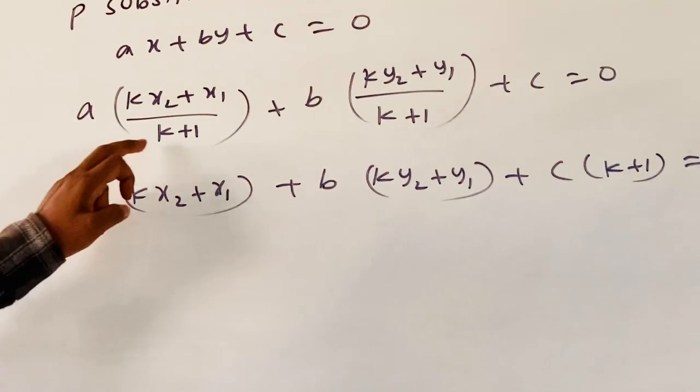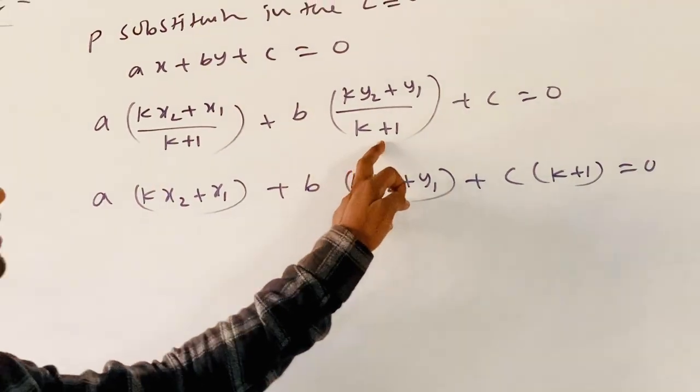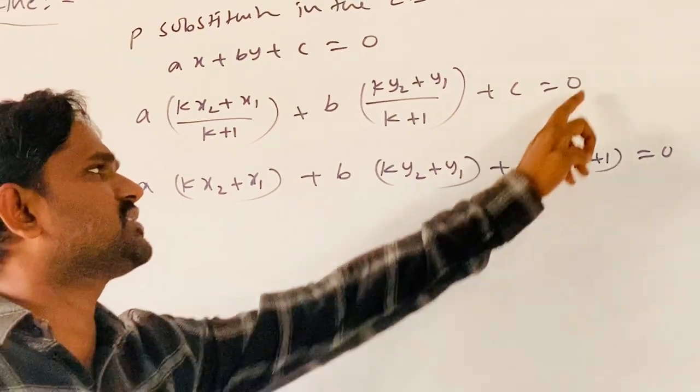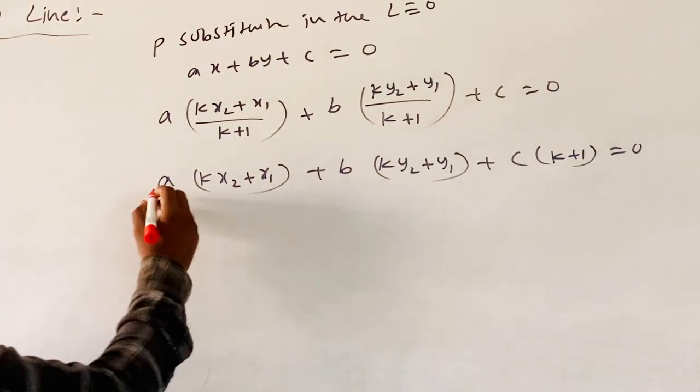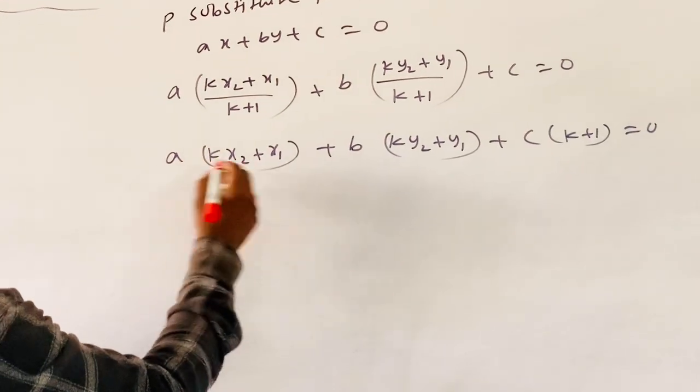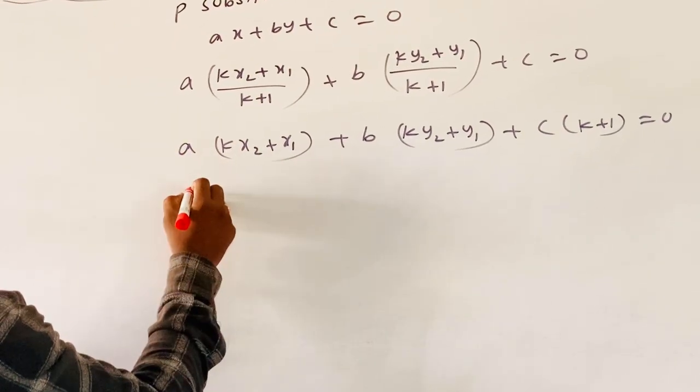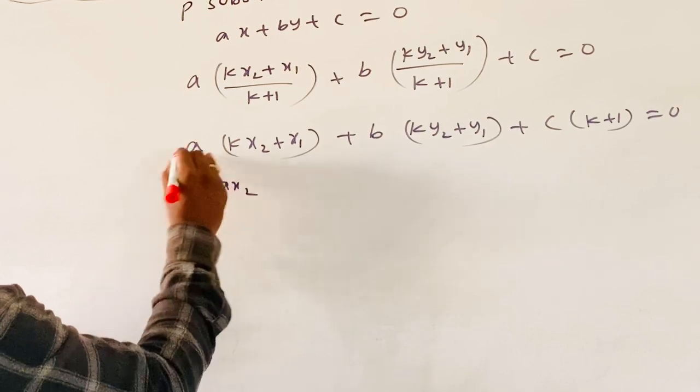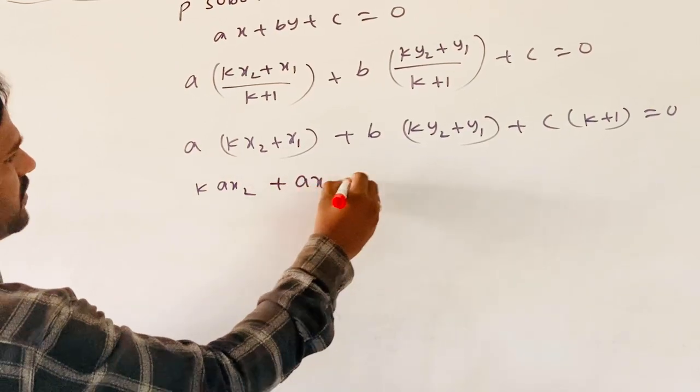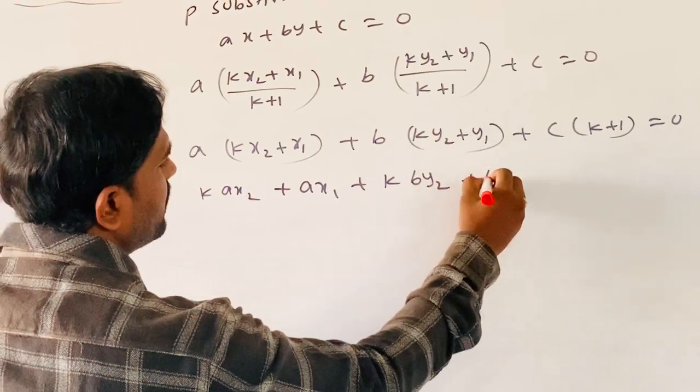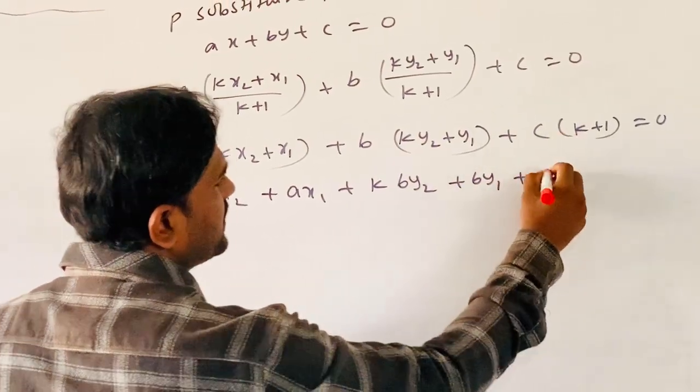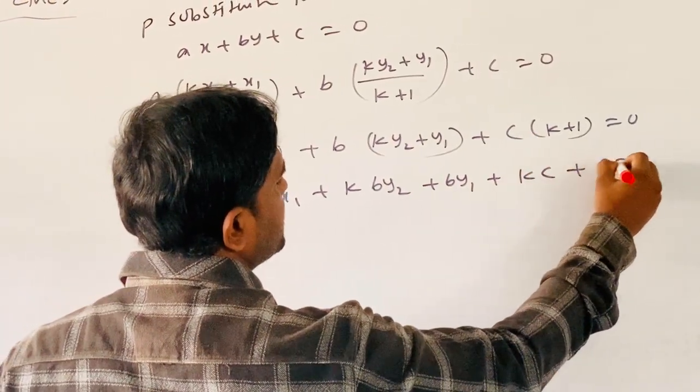Transporting to RHS, multiplying out and taking K as common: K(AX2) plus AX1 plus K(BY2) plus BY1 plus KC plus C equals 0.